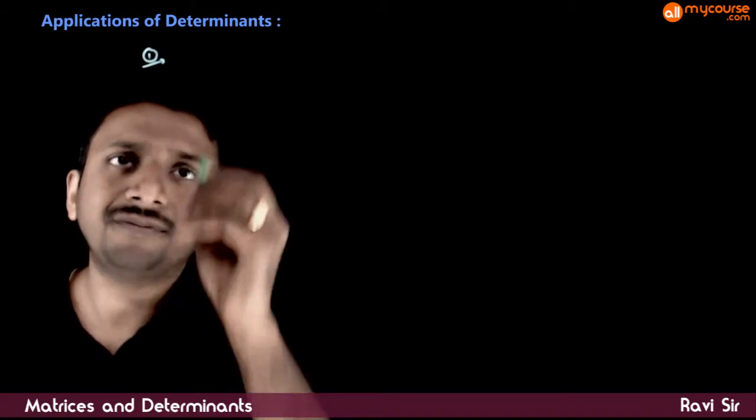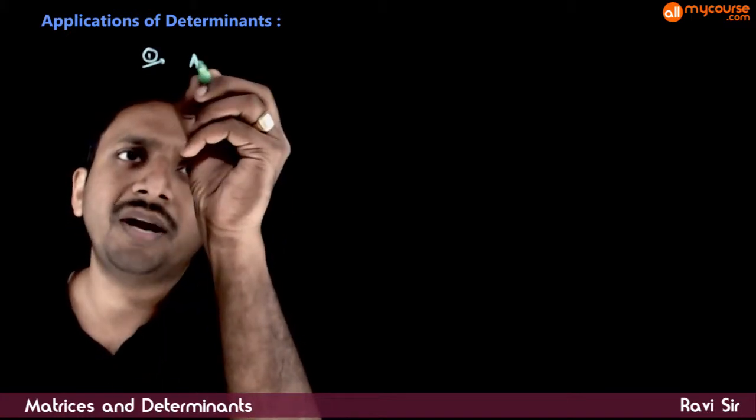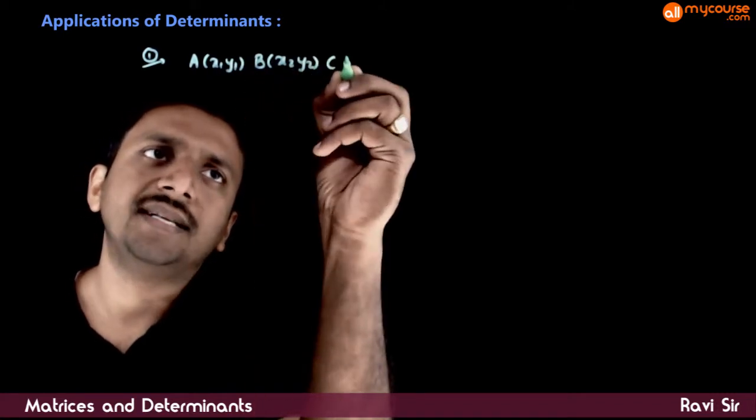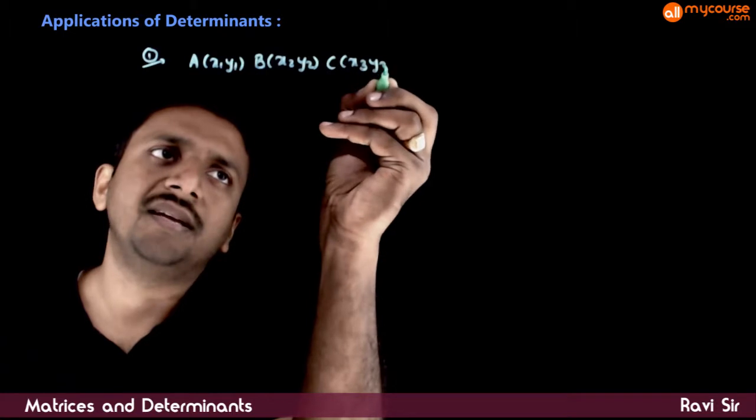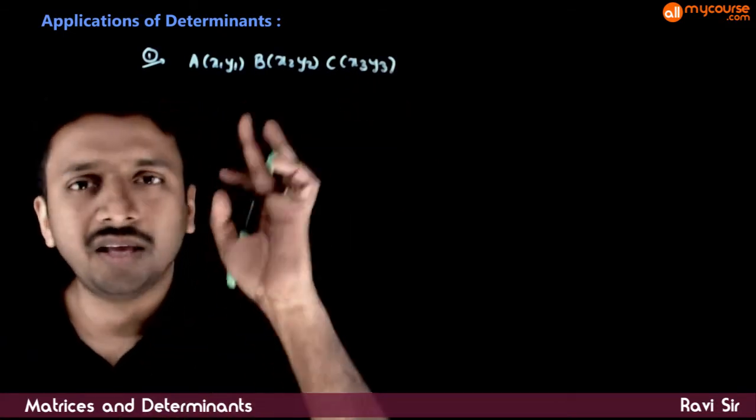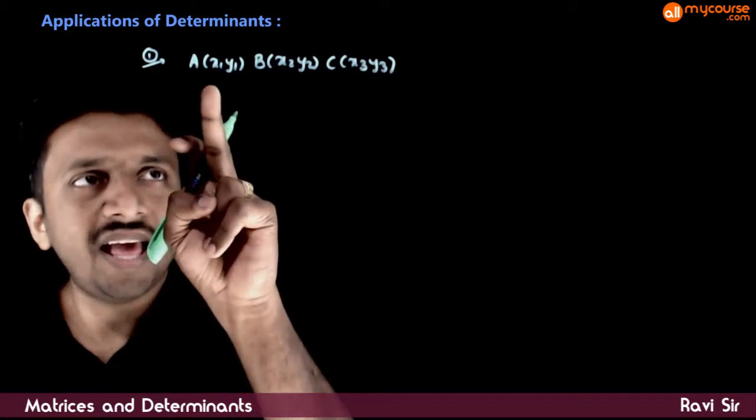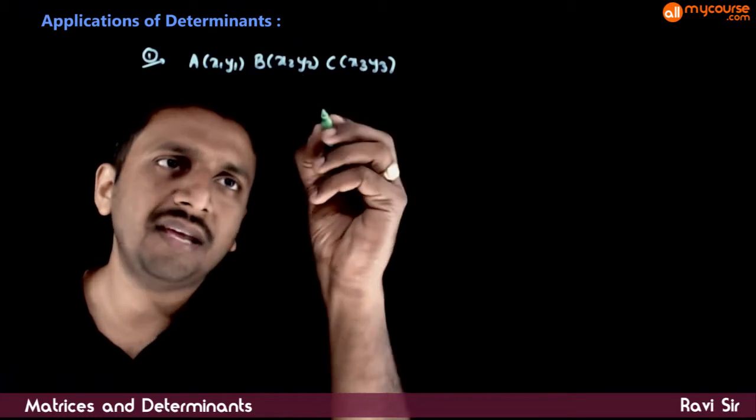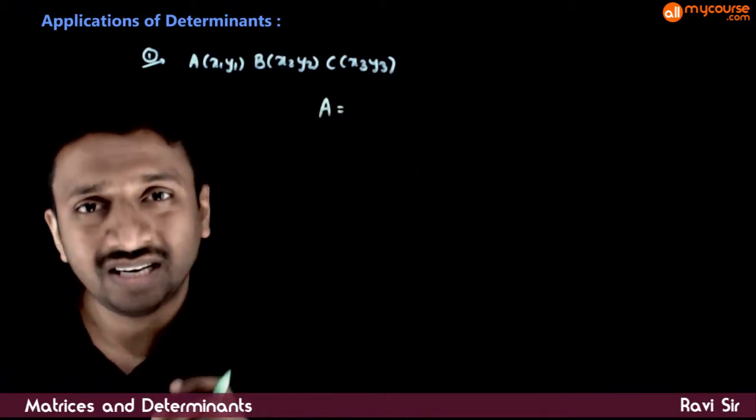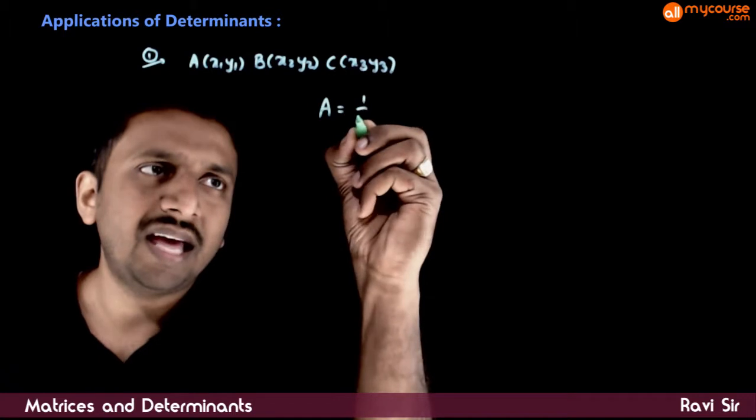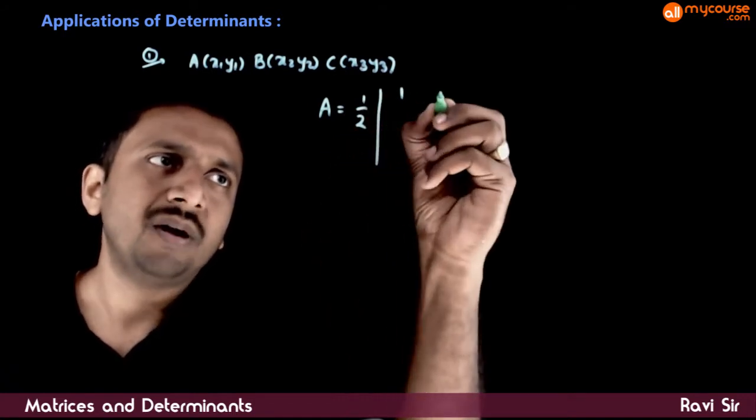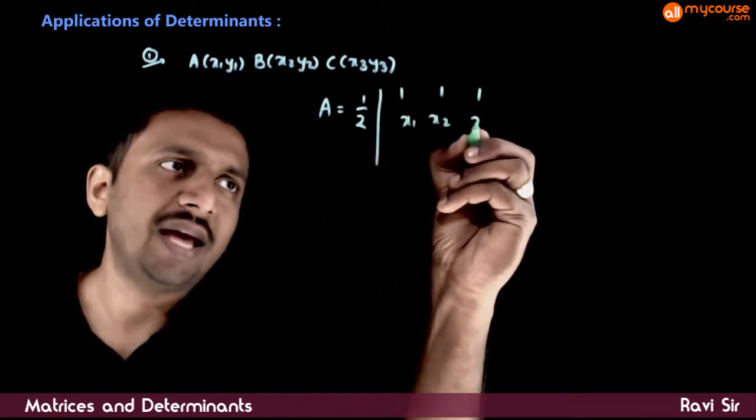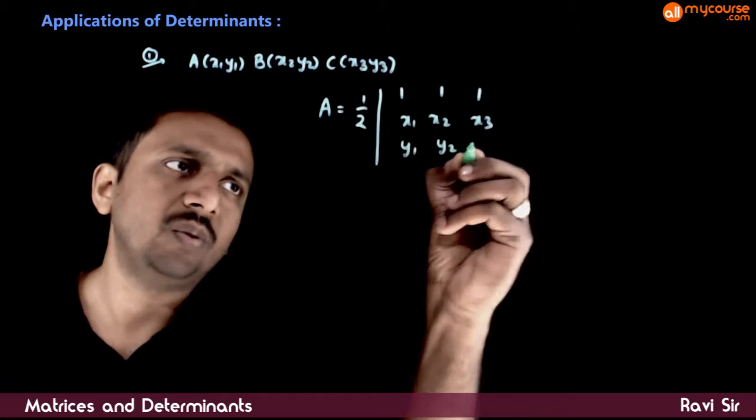First, if you have three points A(x1,y1), B(x2,y2), and C(x3,y3) on the Cartesian plane, what is the area of the triangle formed by these three points? The area of the triangle can be expressed in terms of a determinant: half times the determinant of the matrix with rows (1,1,1), (x1,x2,x3), and (y1,y2,y3).